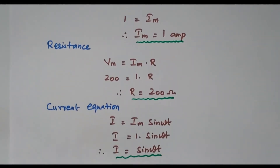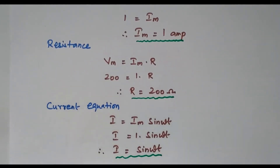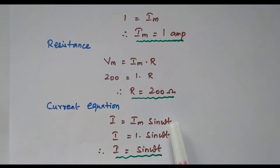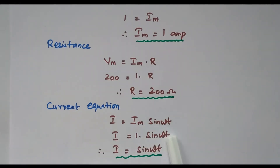Then we write the current equation. I = Im sin ωt, and Im = 1, so I = 1 × sin ωt = sin ωt amperes. We have calculated both the resistance and the current equation.